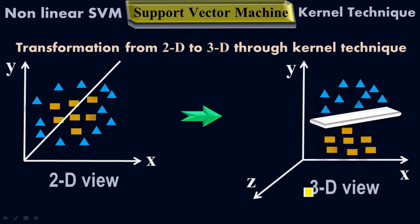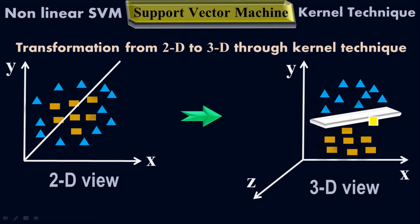We have x, y, z, so it is in a 3D view. In 3D, the non-linear support vector machine draws a plane here where it separates the data classes. All the triangles are above the plane and all the rectangles are below the plane, so both classes of data have been separated nicely.